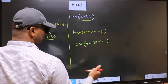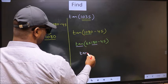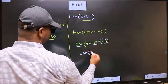Next, here we have 180. So tan is not going to change. It will remain tan. And inside, we get this angle 45.